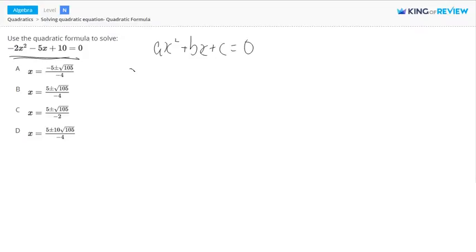So in our case, our a, looking at this equation over here, is going to equal negative 2, because that's with ax squared. And b is going to equal negative 5, and our c is going to equal 10.